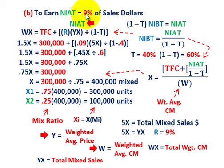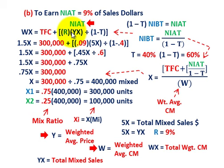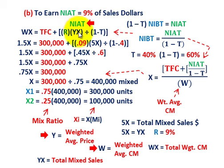For net income as a percent of sales dollars, remember we had to convert everything by determining a rate R. Instead of putting in net income before or after taxes directly, we substituted that rate times our total mixed sales — which is weighted average price Y times units X. Then we went through the arithmetic based on whether we were dealing with net income before taxes or after taxes, making the appropriate substitution.